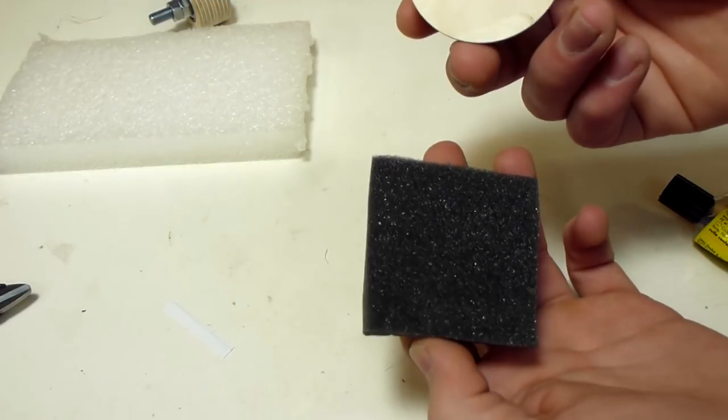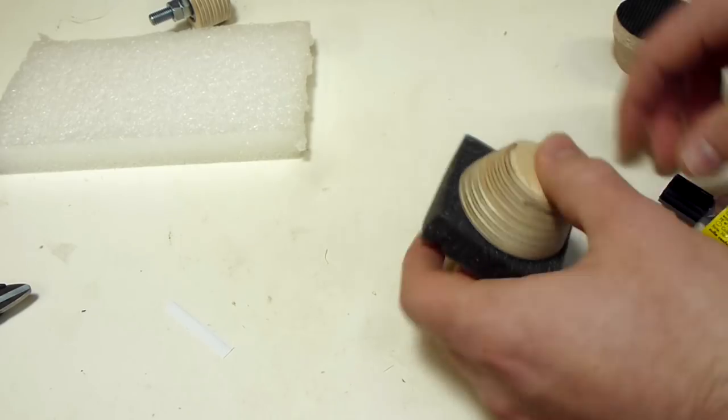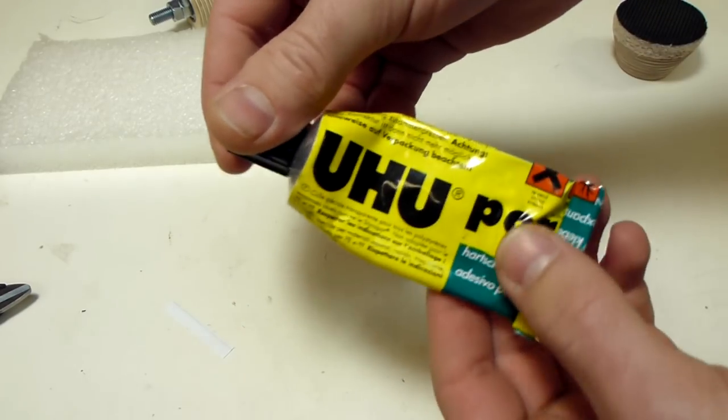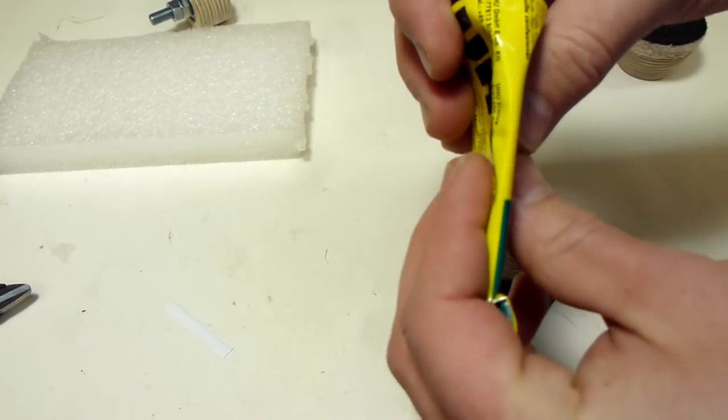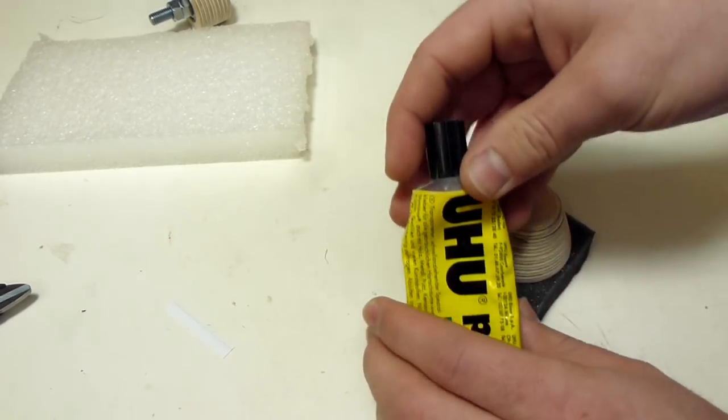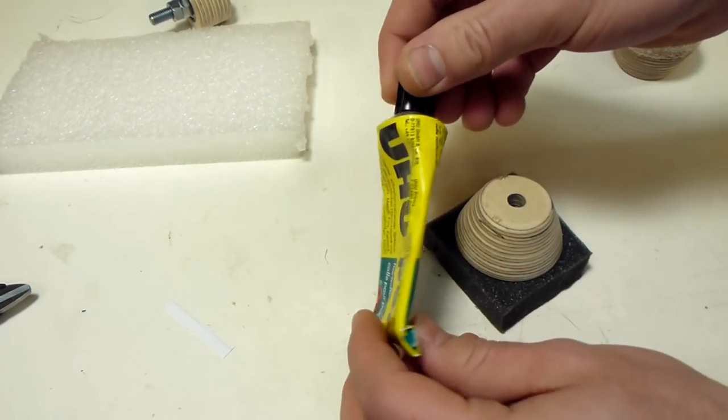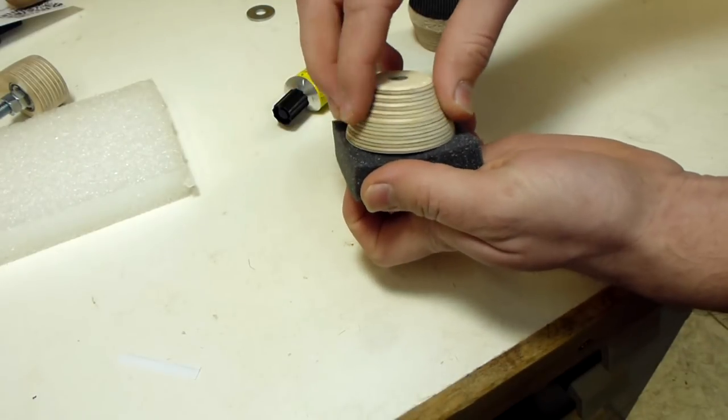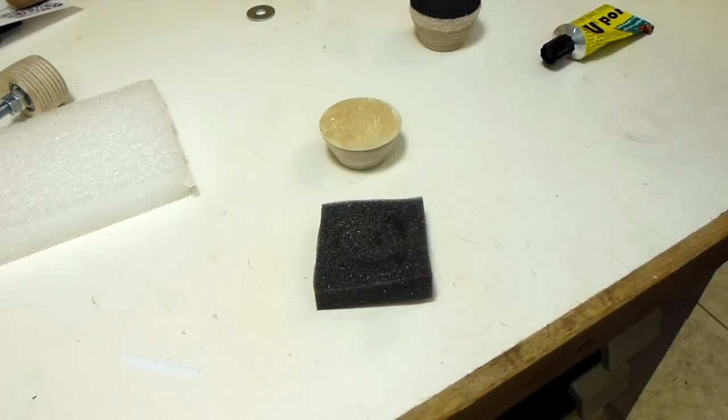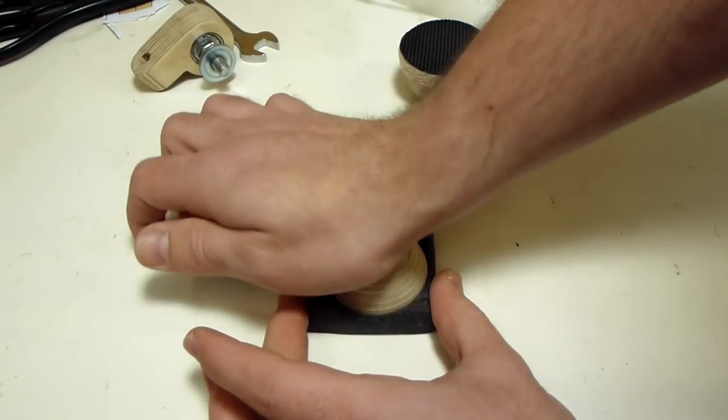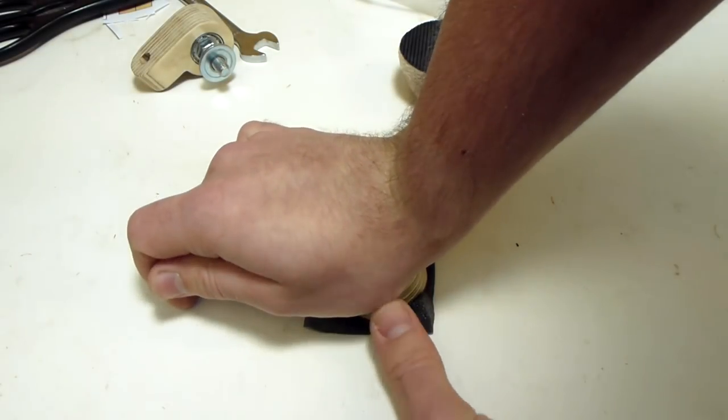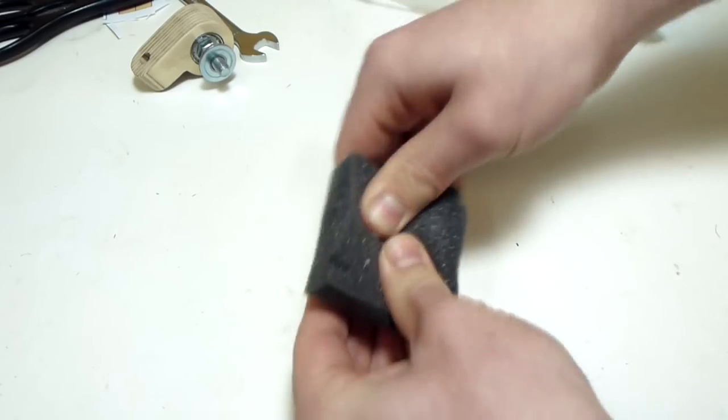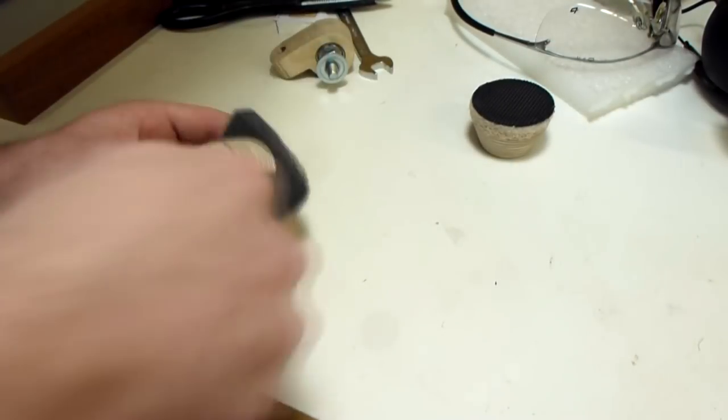For gluing the foam onto the pad you need some good foam glue. I would recommend UHU por. You normally don't find this kind of glue in hardware stores, but you should find it in model makers stores or online. This glue gets applied on both sides and dries for about 10 minutes before you actually glue the two pieces together.